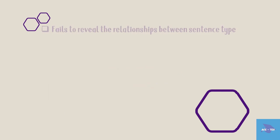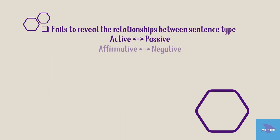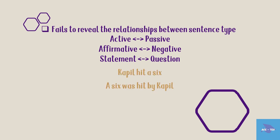IC analysis also fails to reveal relationships between sentence types such as active and passive, affirmative and negative, or statement and question. For example, a sentence like 'A six was hit by couple' and its active counterpart are related, but through IC analysis there is no way to show that they are related. This active-passive relation is not visible in IC analysis.